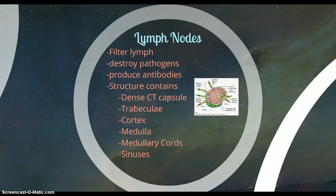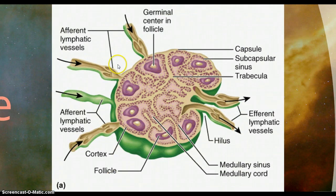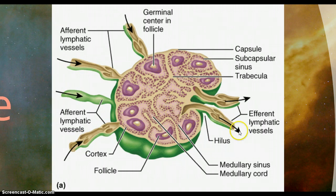The structure of a lymph node contains a dense connective tissue capsule, trabeculae, cortex, medulla, medullary cords — which are basically macrophages and reticular cells that extend from the medulla to the hilum — and the sinuses. Afferent lymphatic vessels are vessels that go into the lymph node, and then there are efferent lymphatic vessels which go out. I don't think I mentioned that in our lymphatic vessel video, so I wanted to mention that now.